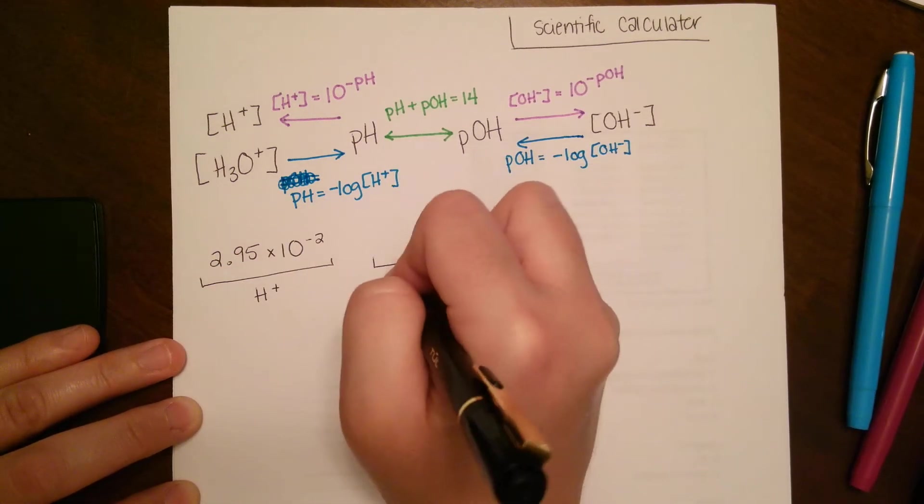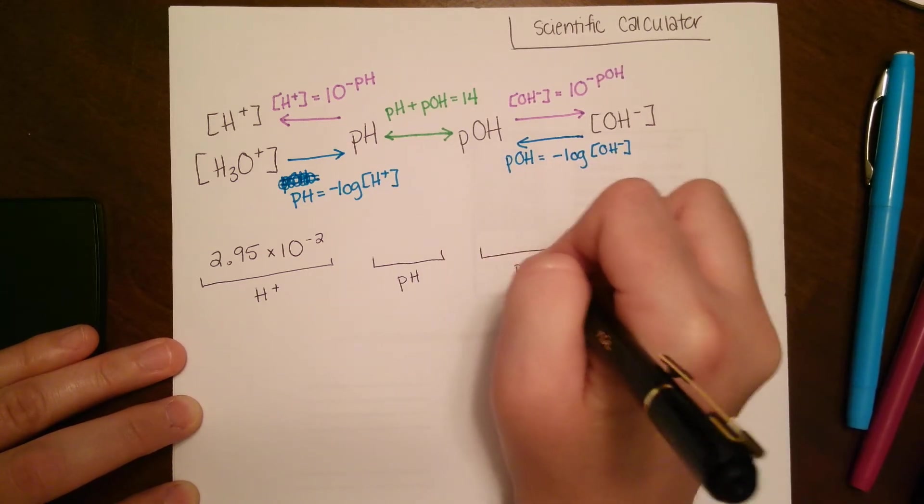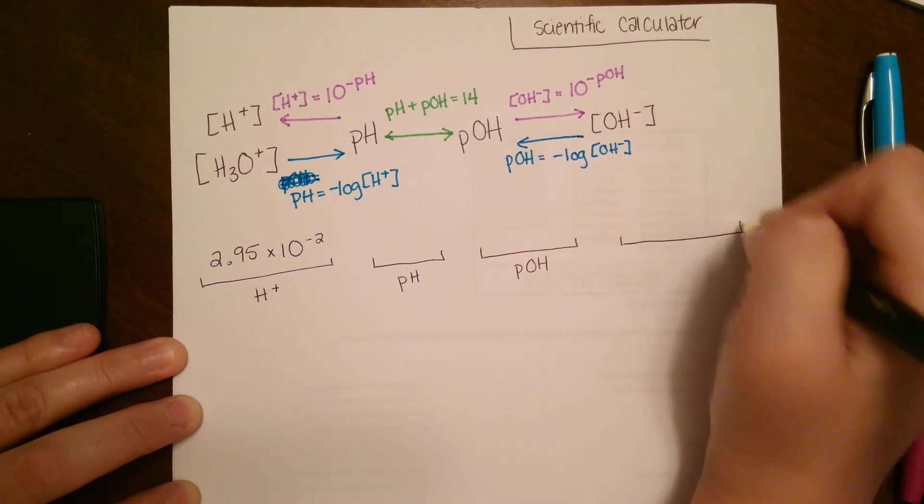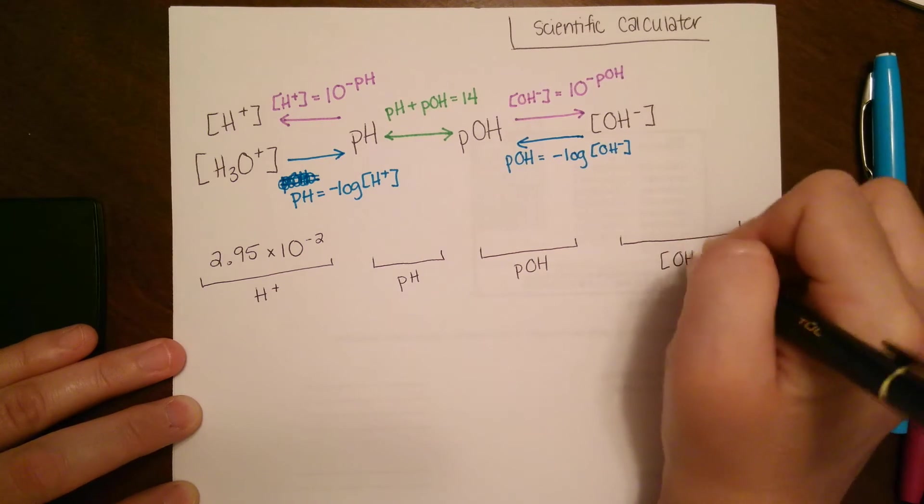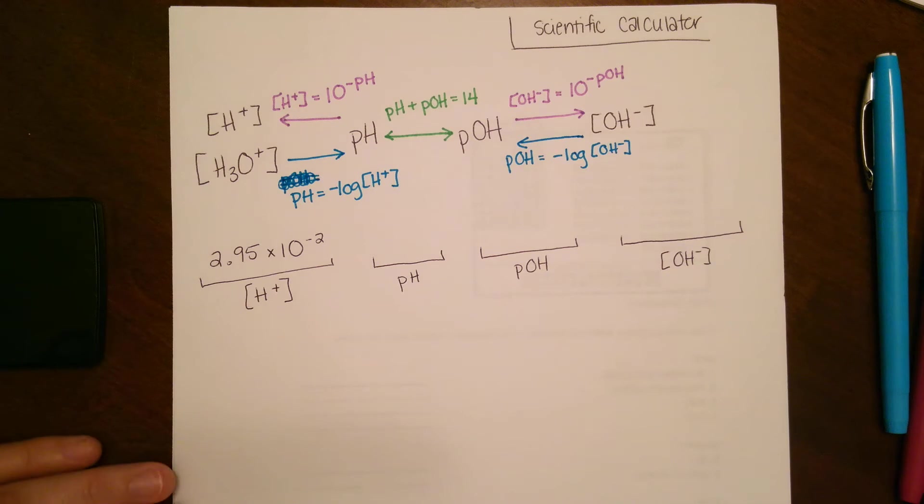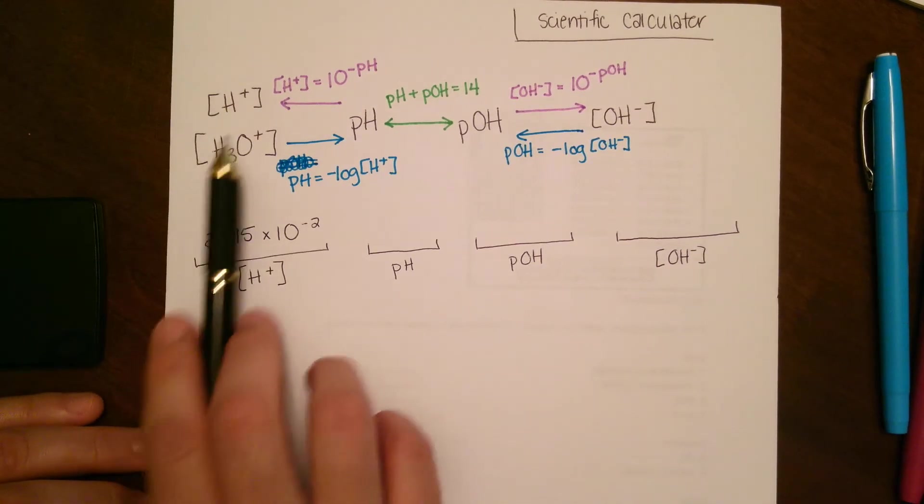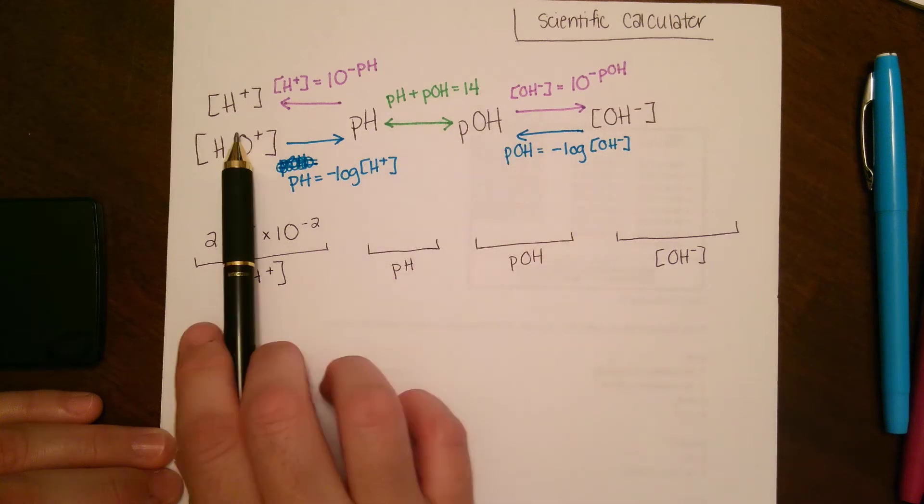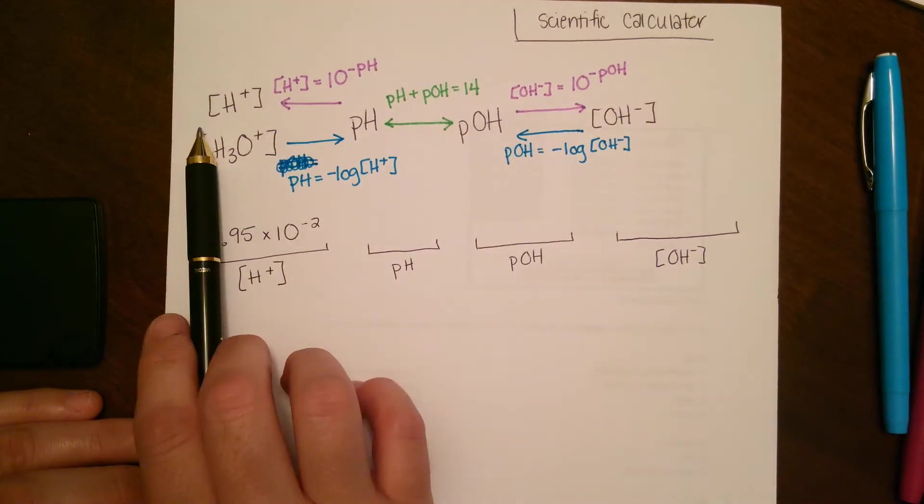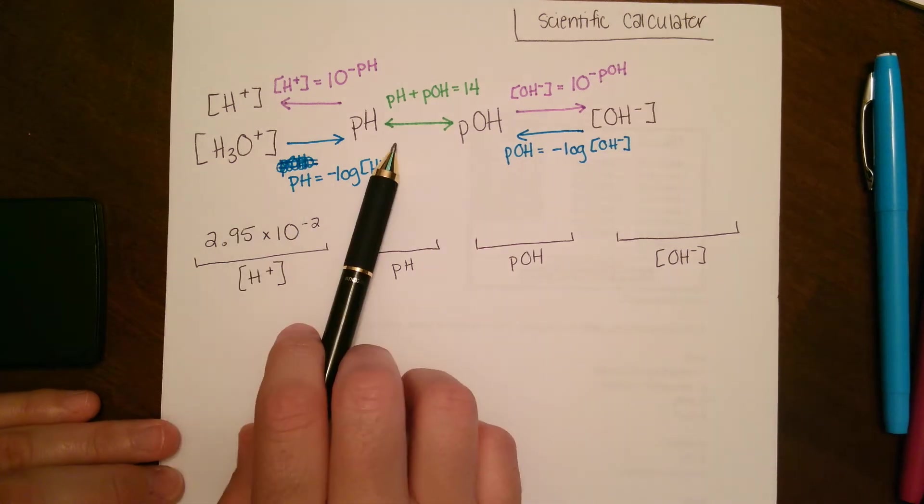We're asked to find our pH, our pOH, and our hydroxide. So we're asked to find everything about this problem. The main thing is that you have a clear starting point. You have to start with hydronium because there's no way to jump straight from hydronium to hydroxide or hydronium to pOH.